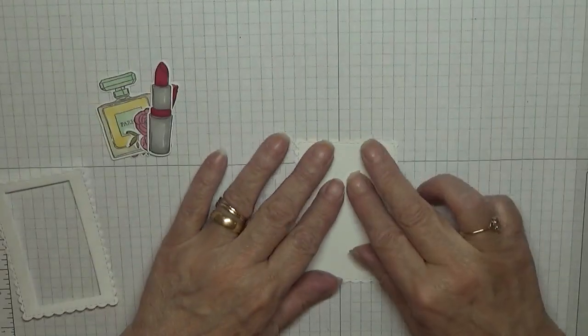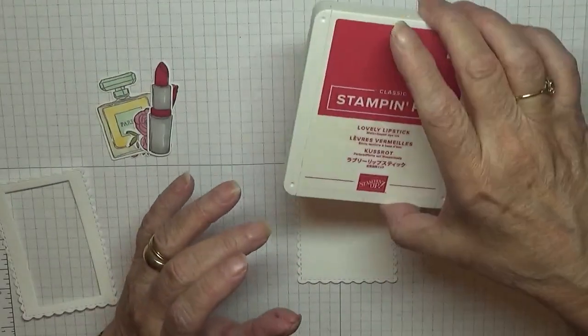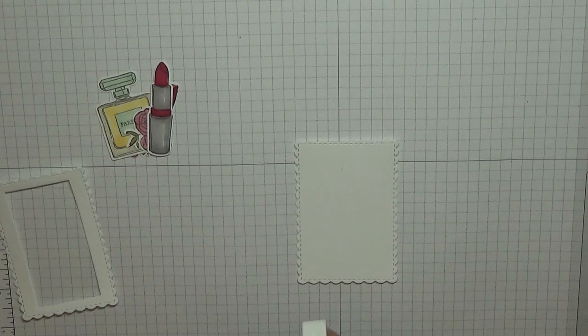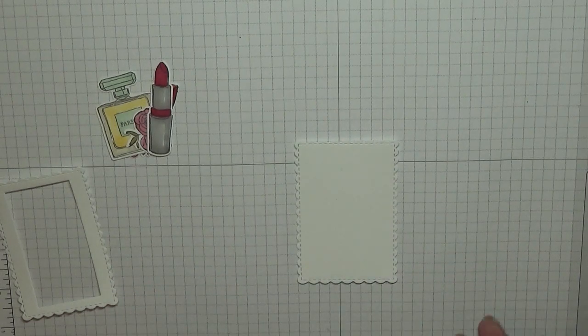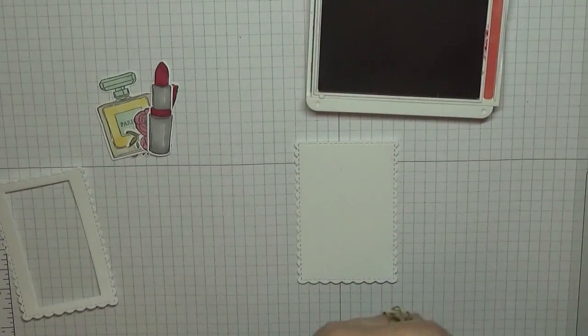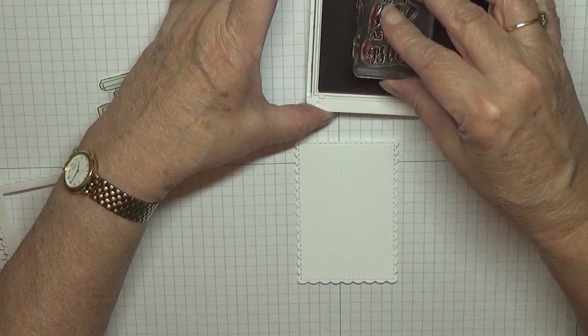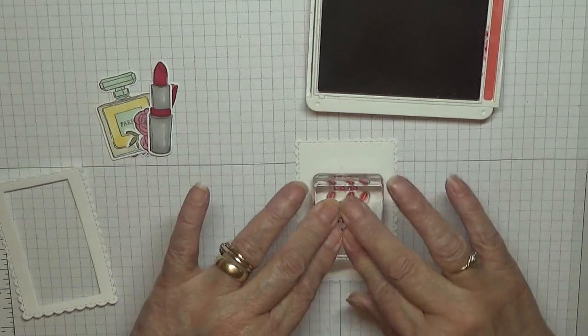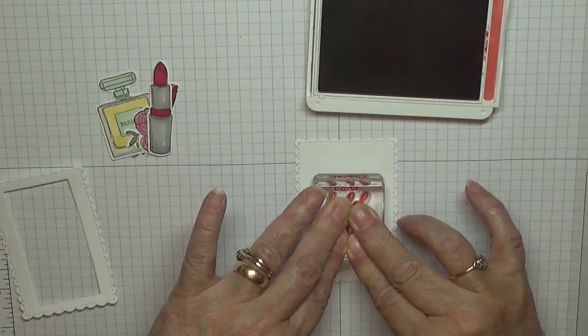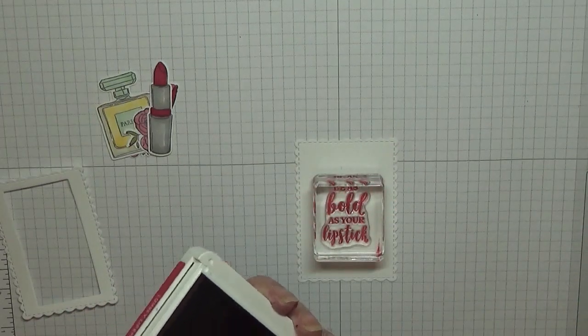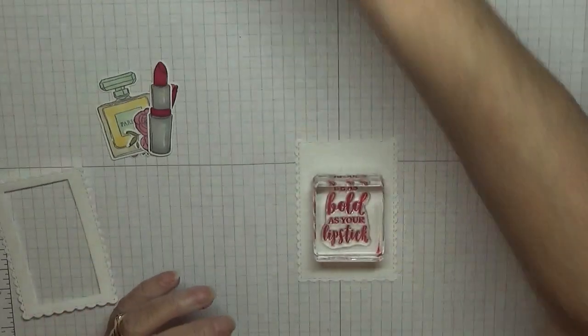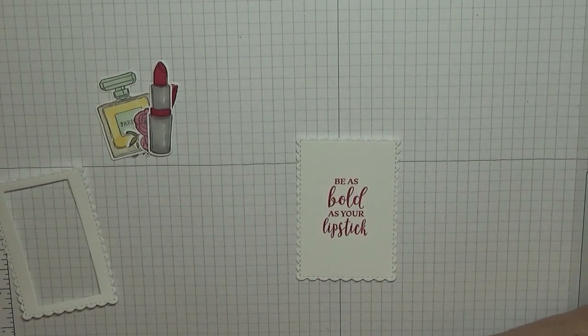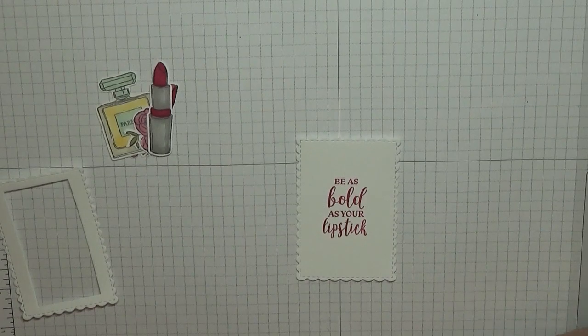So we can put that away, I'll cut them out later. So all we got to do, oh no we've got to stamp a sentiment on here. So with lovely lipstick, I struggle to open them, I am going to stamp be as bold as your lipstick right in the middle. I have to bleach that stamp afterwards.